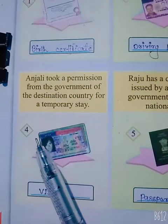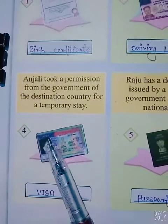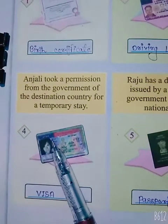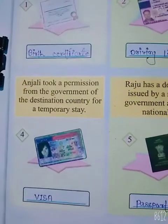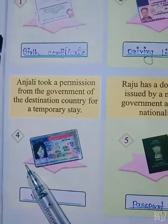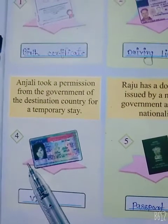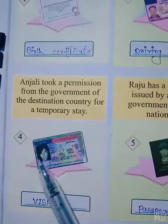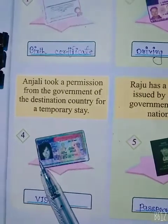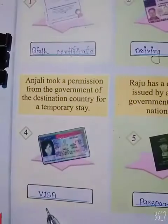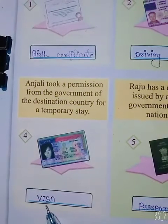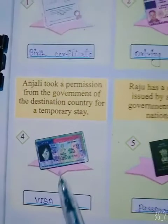Question number four. Anzali took permission from the government of the destination country for a temporary stay. Anzali ne ek aasthai pravas ke liye gantavya desh ki sarkar se anumati li. Aur is card ko hum kya kehte hain? Visa. And this is the picture of a visa.